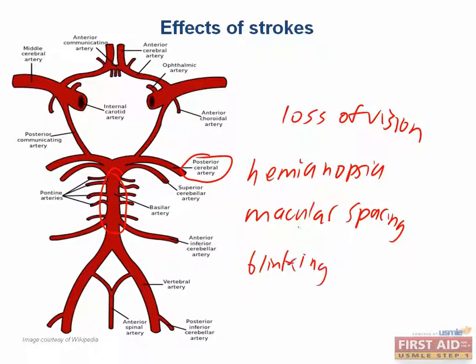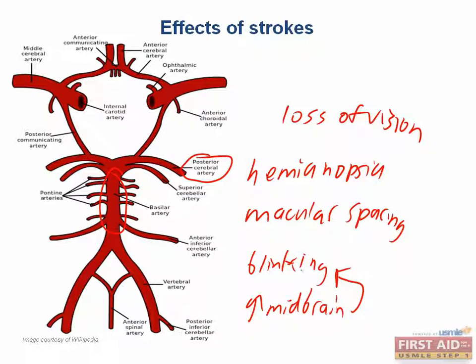Now, why is it that blinking is spared when all of these other things are impaired? It's because the upper part of the midbrain is important for blinking. That's where the nuclei that control ocular movements are. Obviously, that region is spared, and thus you have sparing of ocular movements.